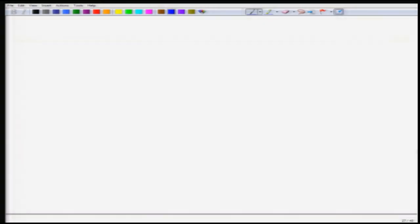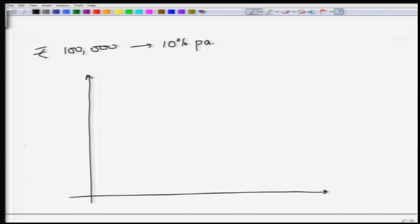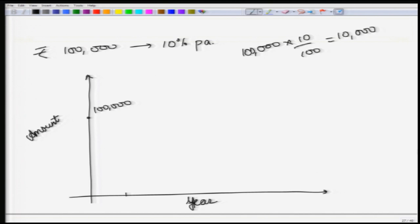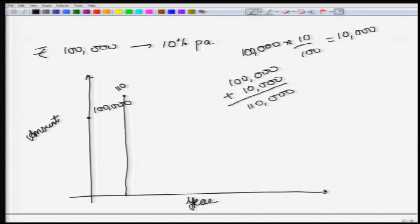To understand this, suppose you have deposited 100,000 rupees into your bank account, and this bank is giving interest at the rate of 10 percent per year. In the zeroth year you deposited 100,000 rupees. After one year, the interest is 100,000 × 10/100 = 10,000. So at the end of one year the amount in the bank is 100,000 + 10,000 = 110,000 rupees.